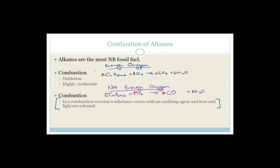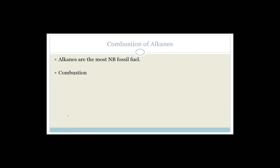For example: propane burns in excess oxygen. Write a balanced reaction. Propane is C3H8. Using CnH(2n+2): n=3, so C3H8. The reaction is C3H8 + O2 → CO2 + H2O. Leave oxygen alone until last — it's a diatomic element and we balance it last. We have three carbons, so put 3 in front of CO2. We have eight hydrogens, so put 4 in front of H2O.